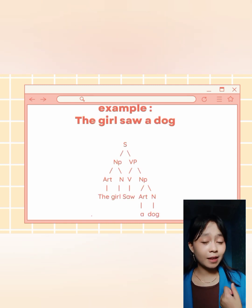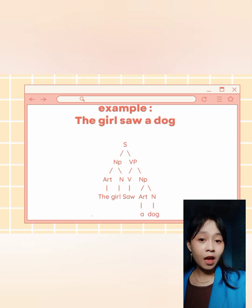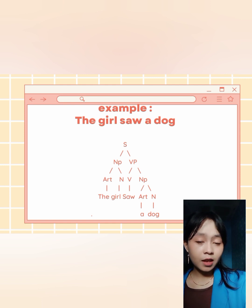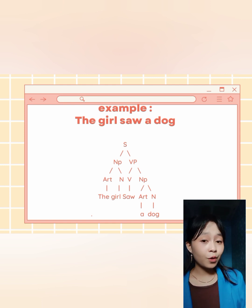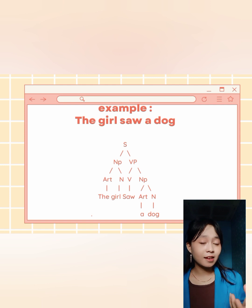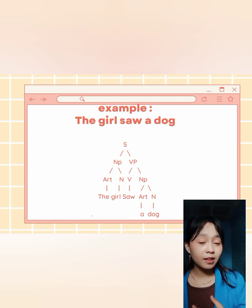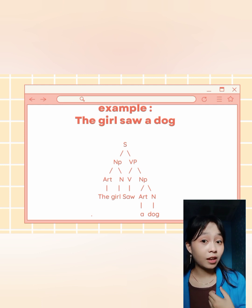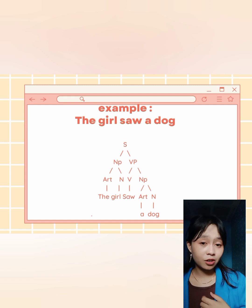Let's move to the examples. I have two examples. First: 'The girl saw a dog.' We analyze this sentence: 'the' is an article, 'girl' is a noun, 'saw' is a verb, 'a' is an article, and 'dog' is a noun.